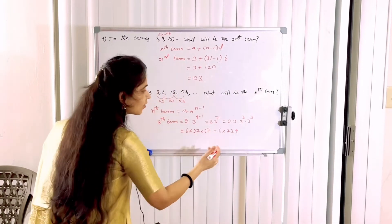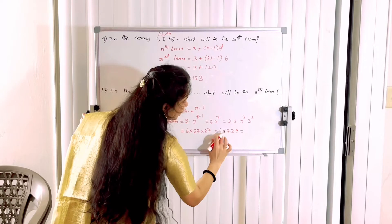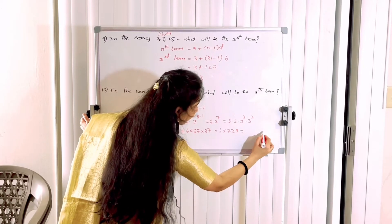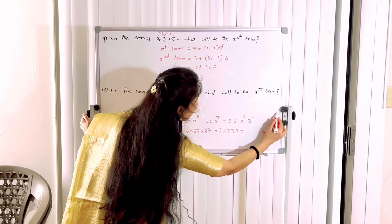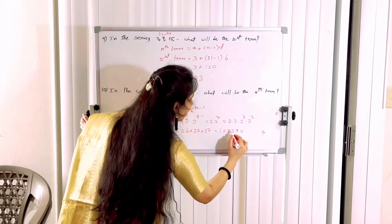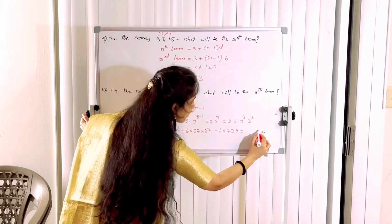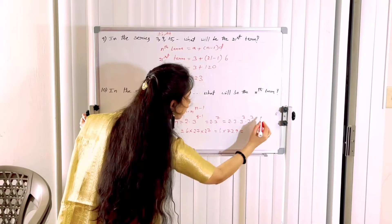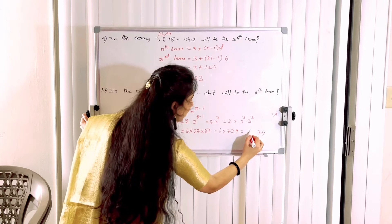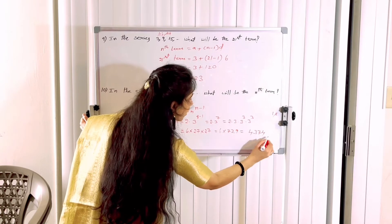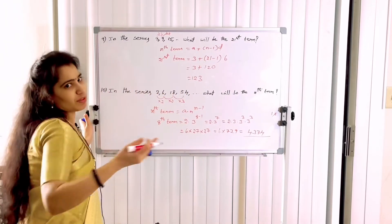6 × 729. Multiplication: 6 × 5 = 54, carry 5. 6 × 2 = 12, plus 5 = 17, carry 1. 6 × 7 = 42, plus 1 = 43. So the answer is 4374.